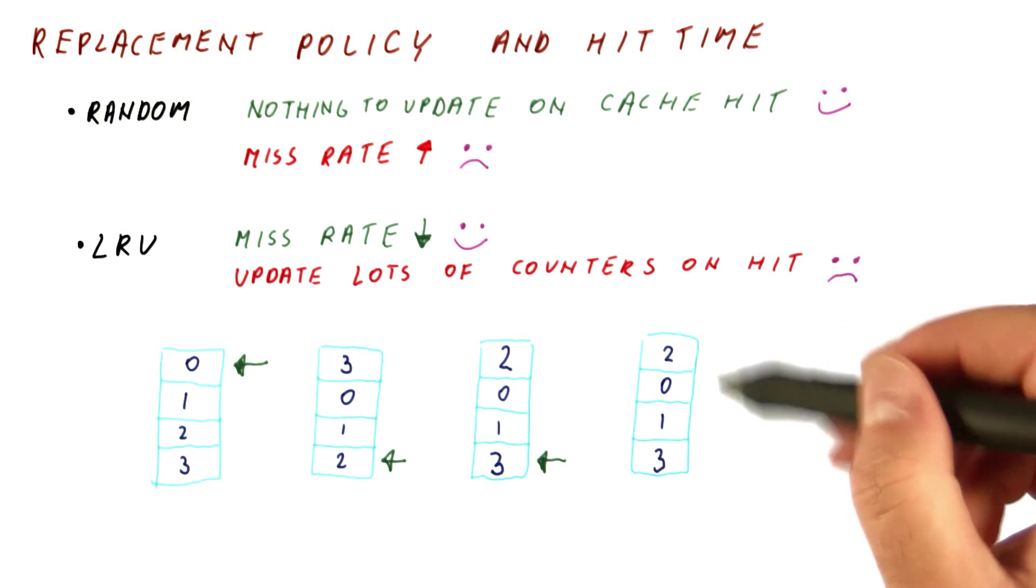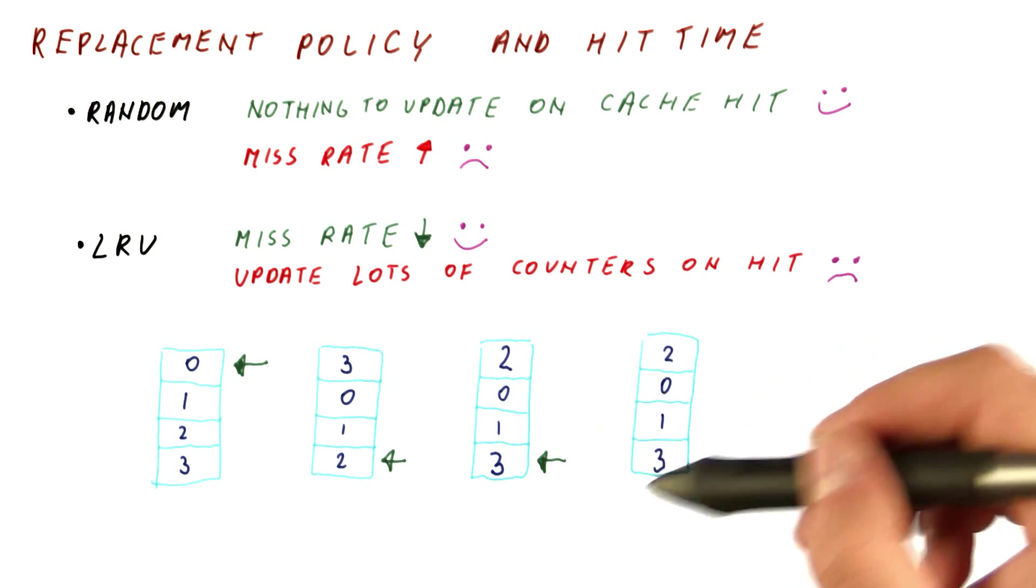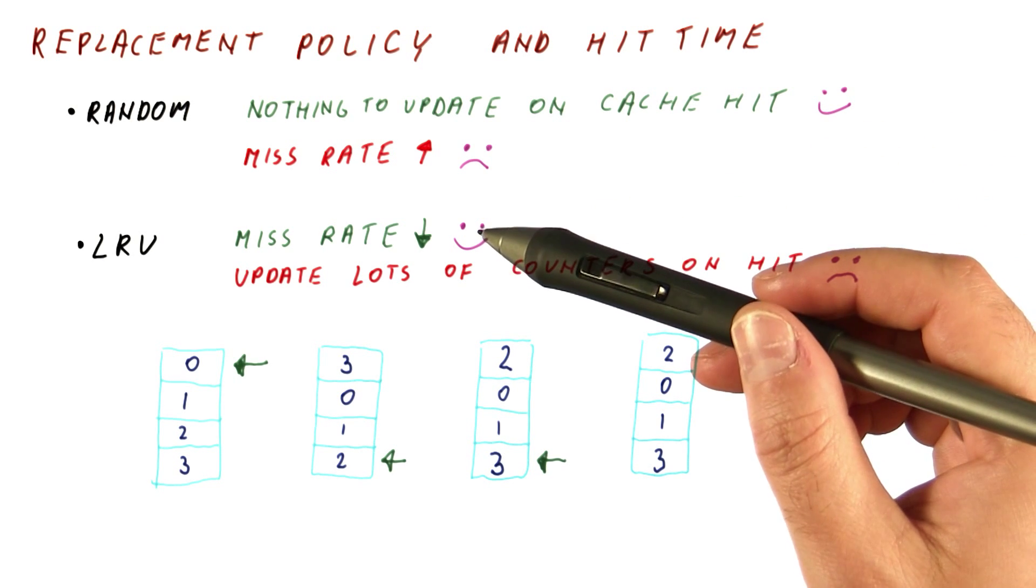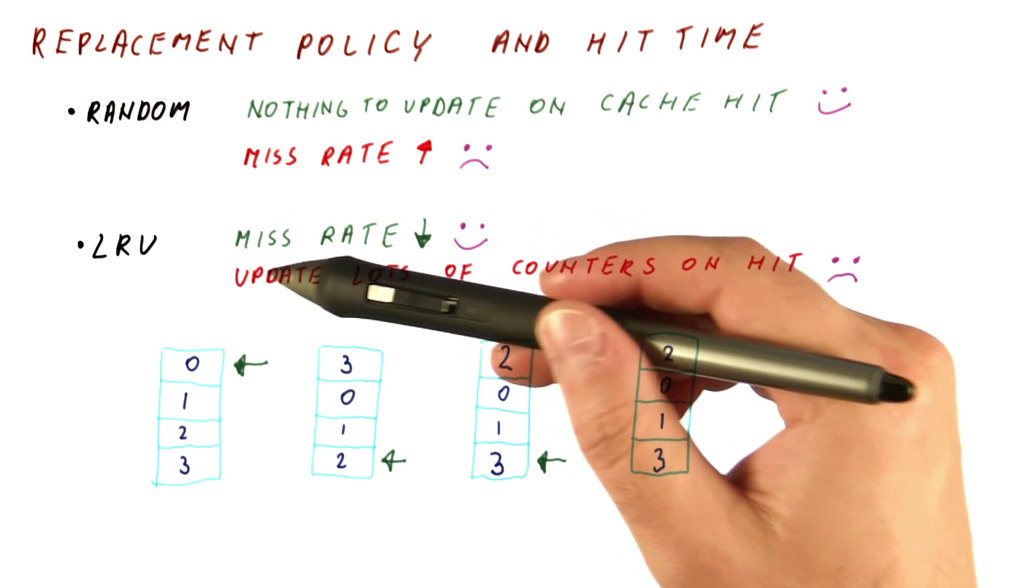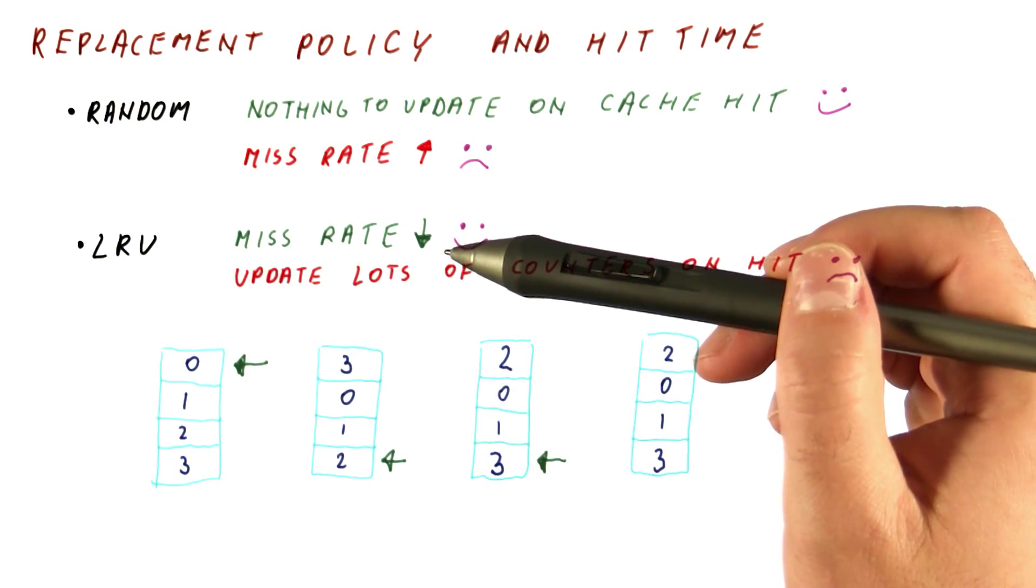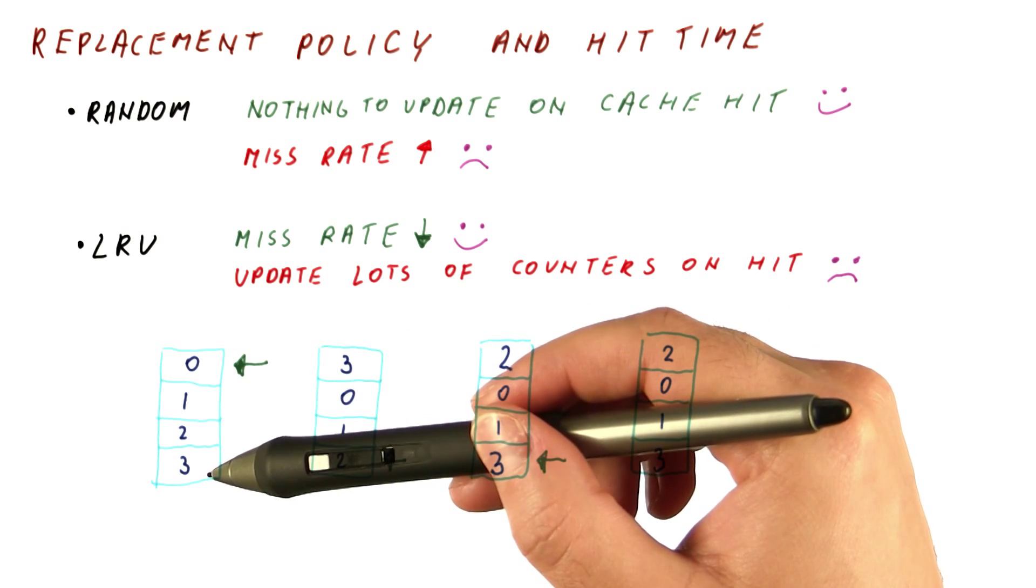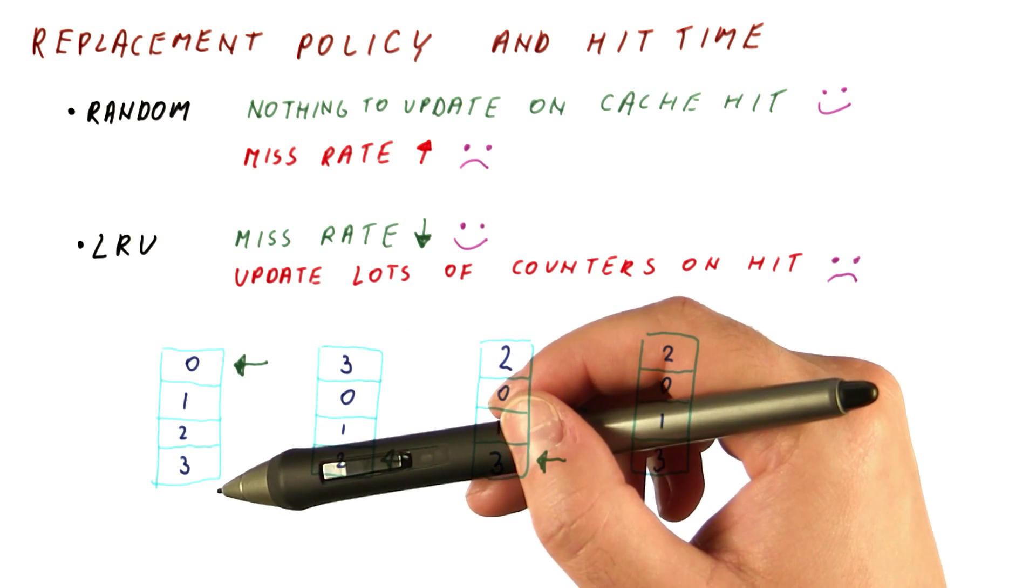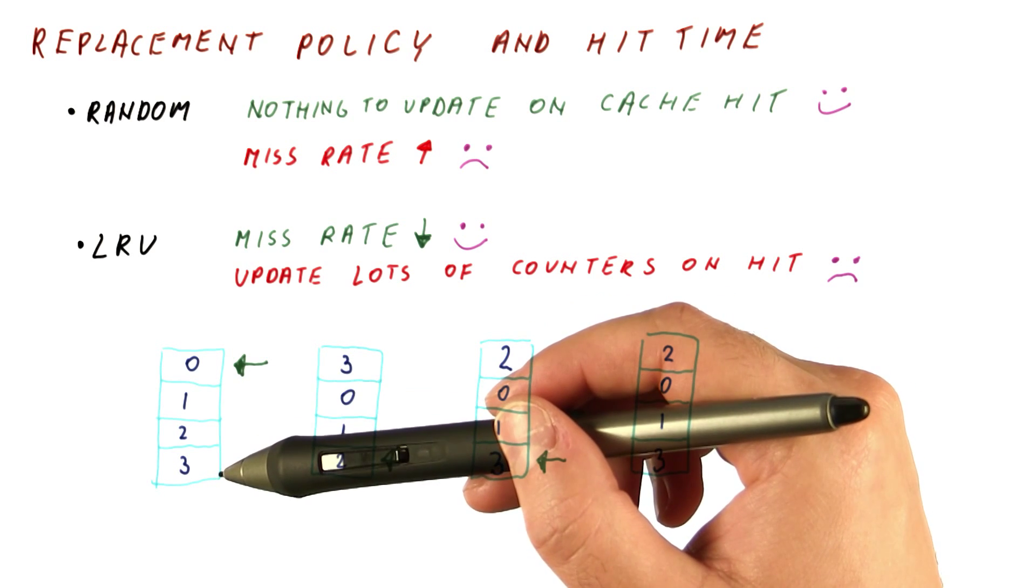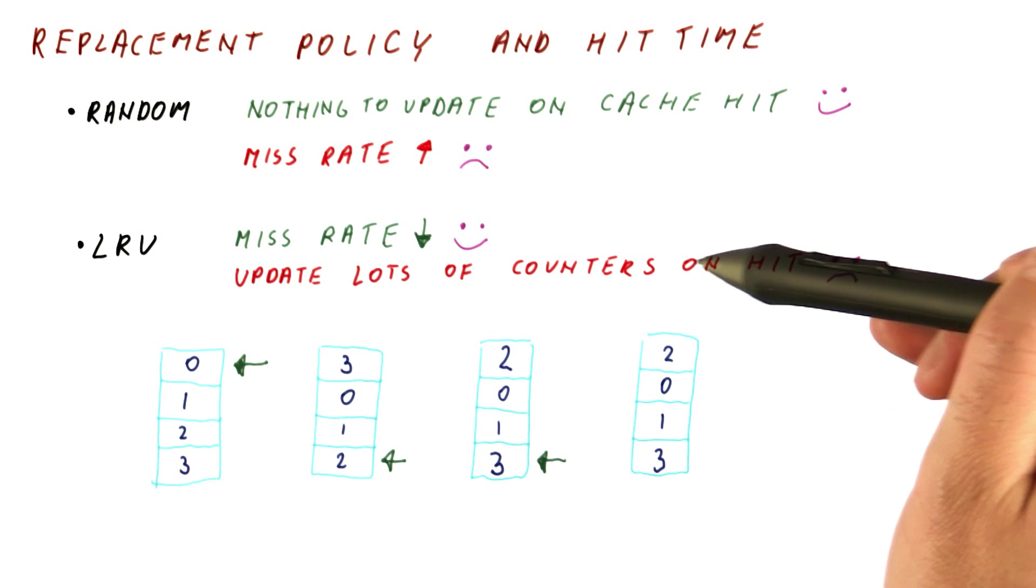And that, again, slows down the hits and spends power. So what we want is a replacement policy that retains the miss rate very close to LRU, meaning we want to smartly replace the blocks so that we kick out the block that is unlikely to be used soon, or the least likely to be used soon. But we want to do less activity on cache hits to do that.